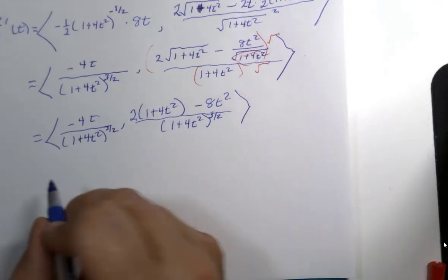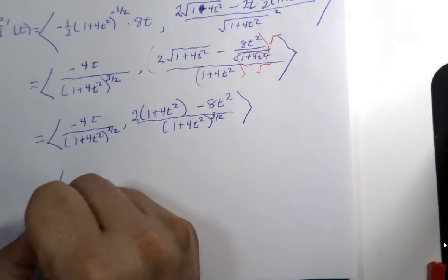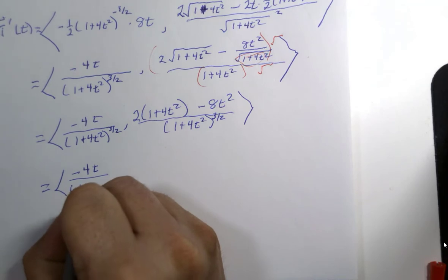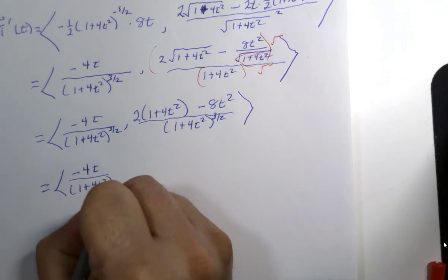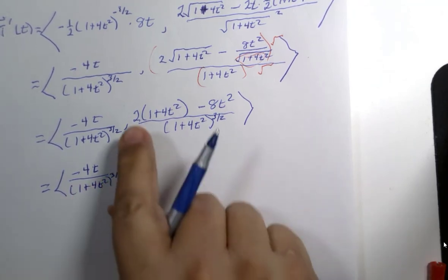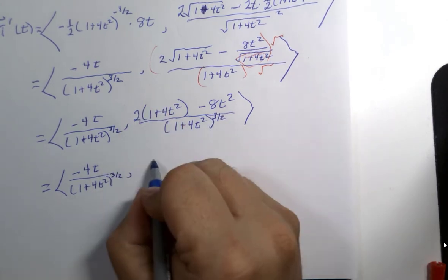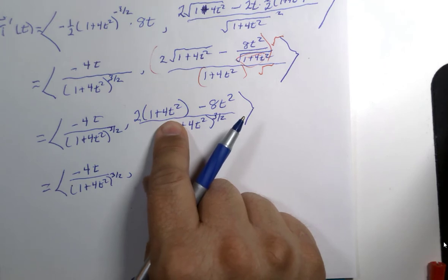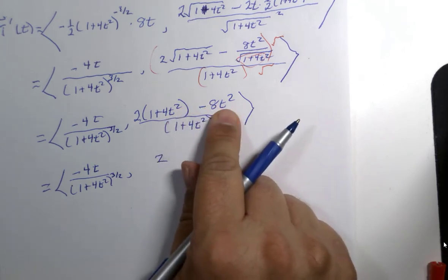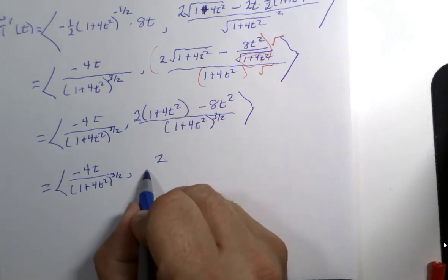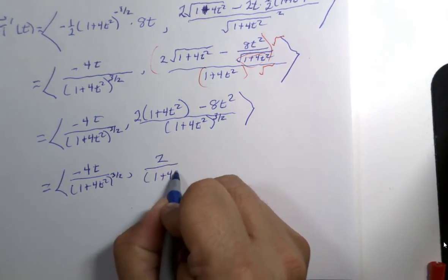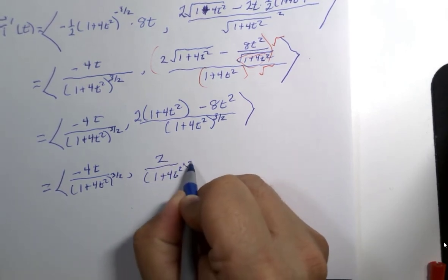This is some work here. Negative 4t over 1 plus 4t squared to the three halves power, 2 times 1 is 2, 2 times 4t squared is 8t squared, wait a second, minus 8t squared plus 8t squared is 0, all over 1 plus 4t squared to the three halves power. So what we've done so far is we've calculated the numerator of this formula.